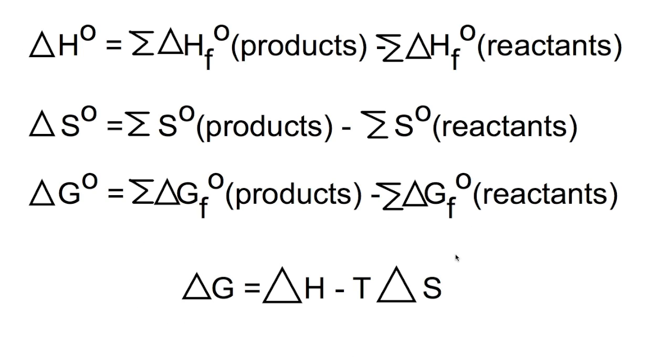We can combine the three into an equation where we have change in Gibbs free energy equals enthalpy change minus T, temperature in Kelvin, multiplied by the entropy change.